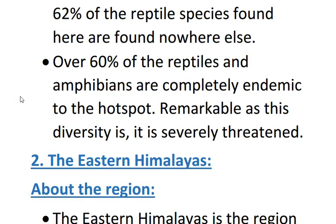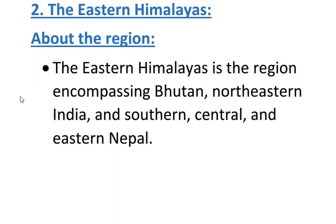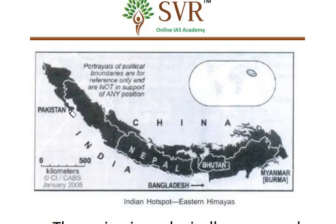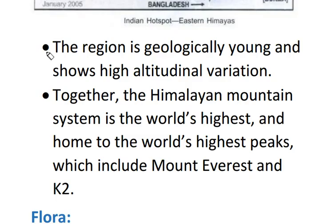Now we are going to discuss about the Eastern Himalayas and important facts on this topic. The Eastern Himalayas includes Bhutan, northeastern India, and south, central, and eastern Nepal. Mainly three countries are covered in the Eastern Himalayas: India, Nepal, and Bhutan. This region is geologically young, and in geography we have discussed the Himalayan formation.